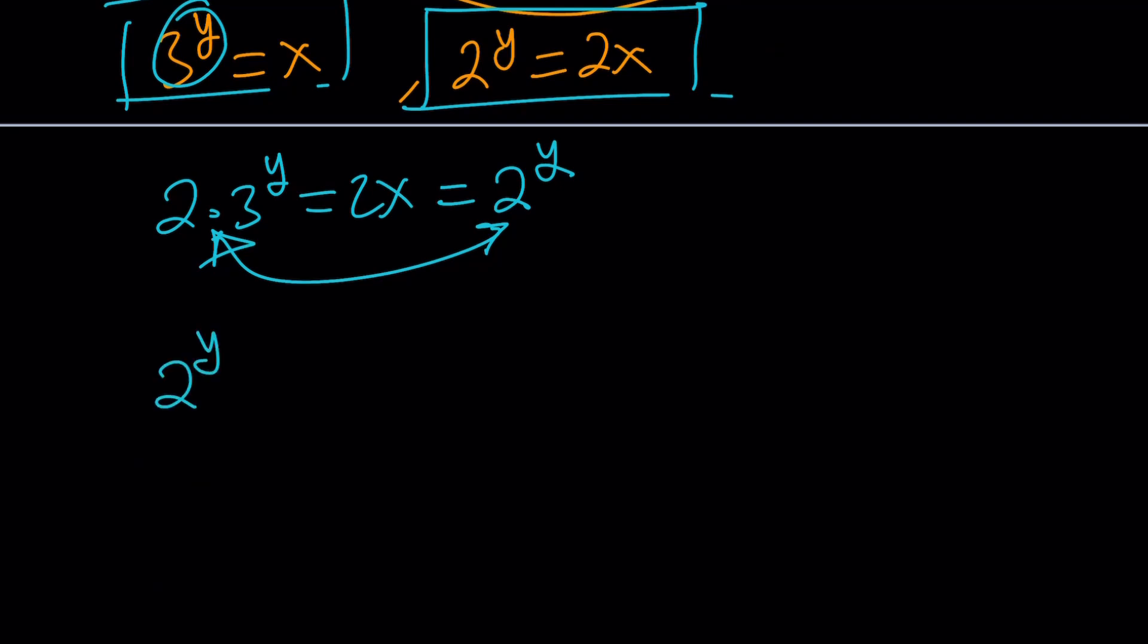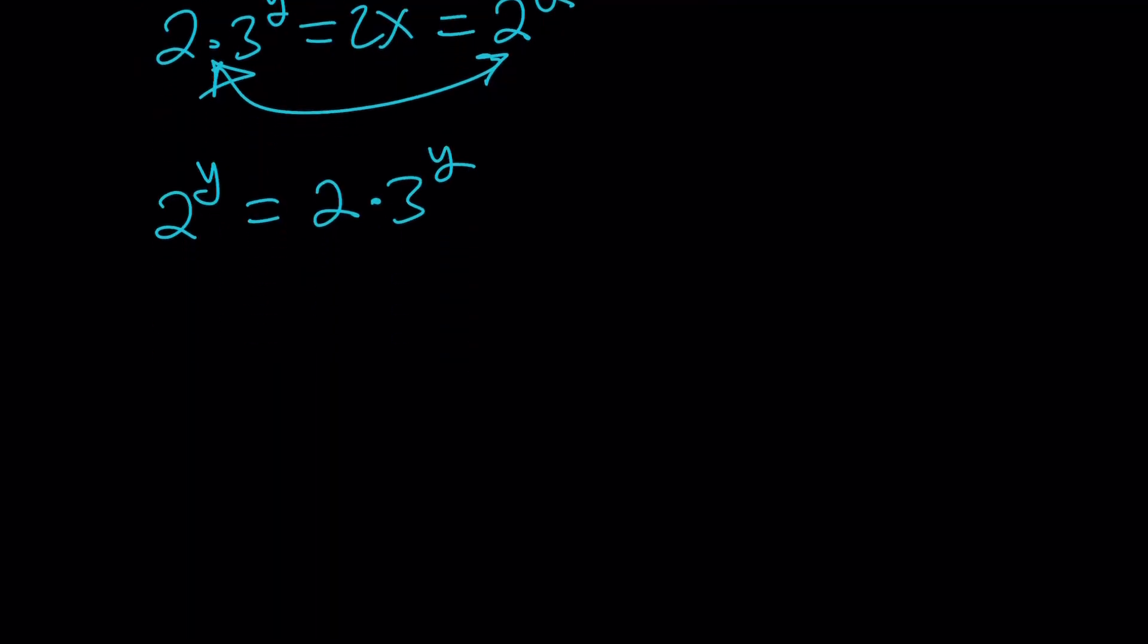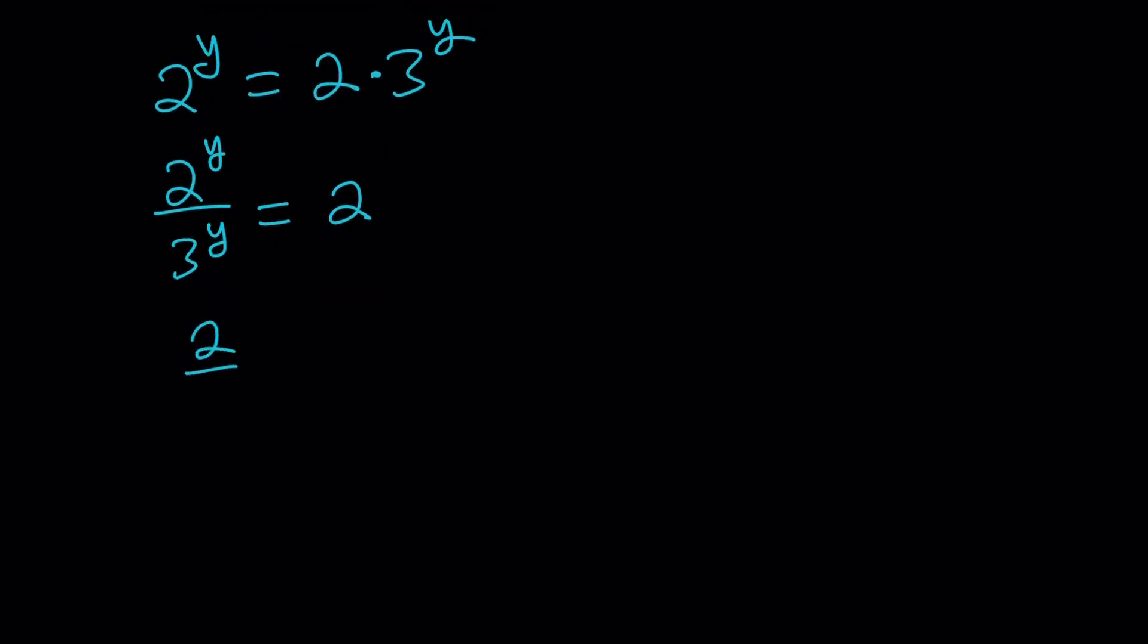For these kinds of problems, a lot of times people are going to try to put the 2s together, and then try to solve for y. You can do that, that's definitely fine. But instead, I'm going to bring the y's together. It's a wiser way to do it. Divide both sides by 3 to the y, and then you can basically write this as 2 over 3 to the power y equals 2. At this point, you have a lot of choices - using definitions or logging both sides.